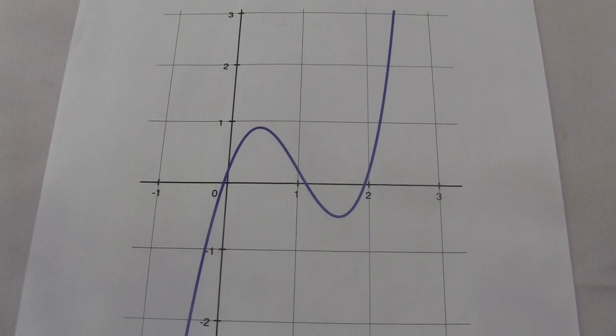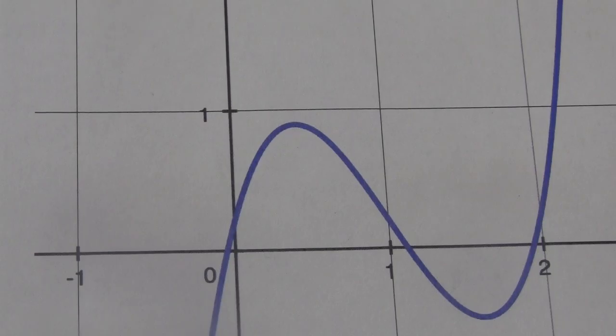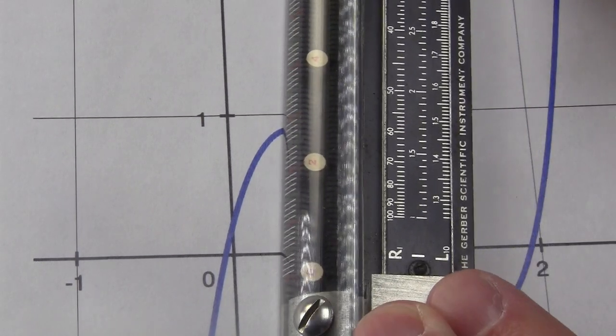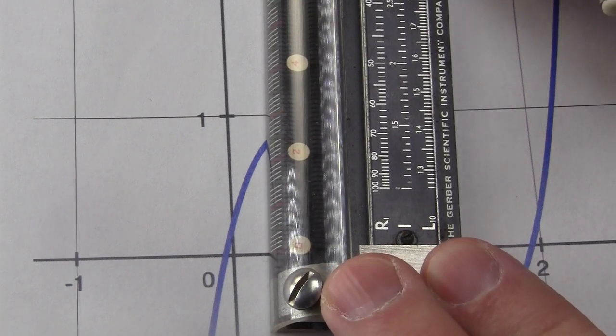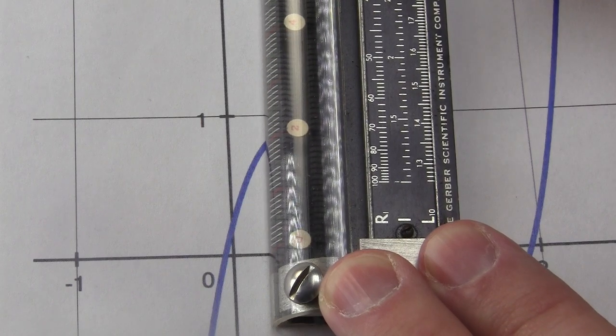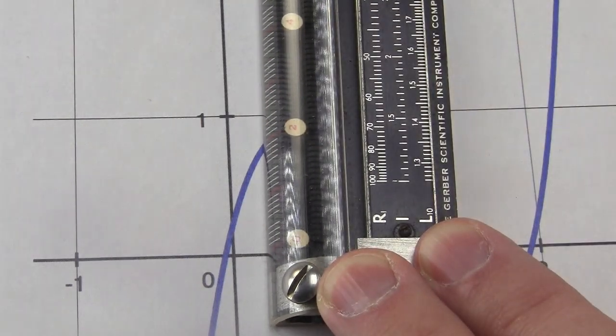One of the main original applications of this thing was multiplying a graph by a constant. Like, here's the graph of one function. Let's also try to draw the graph of two times that same function and also a half times that function. All right, I'm going to put the x-axis at zero on the scale and slide the scale so that the actual curve hits it on the two.